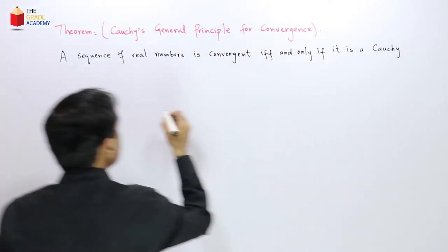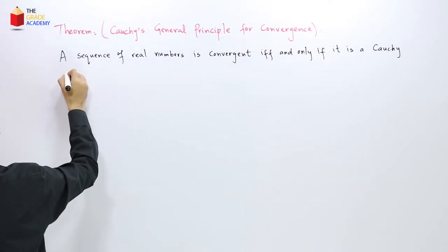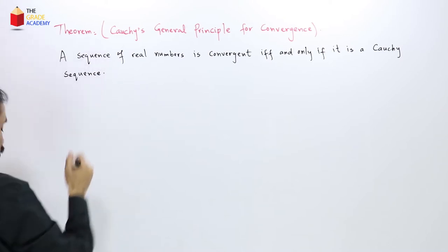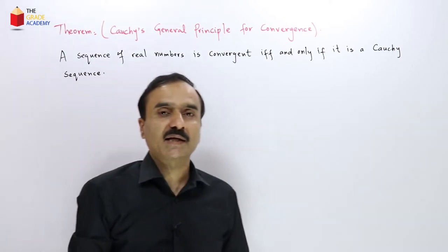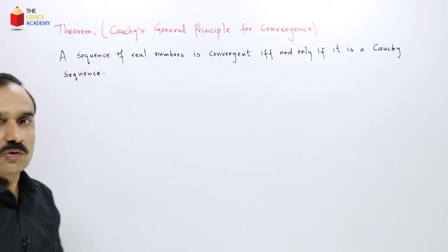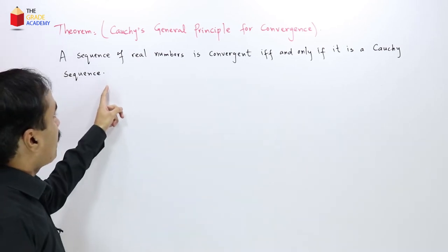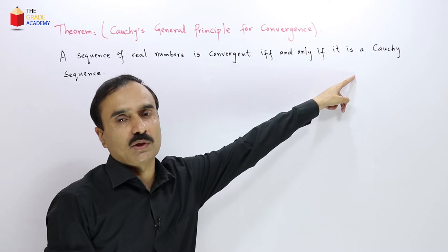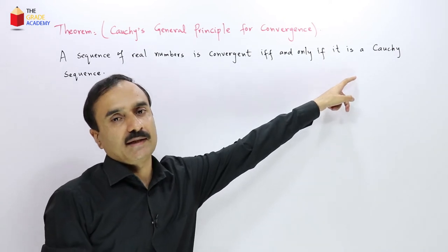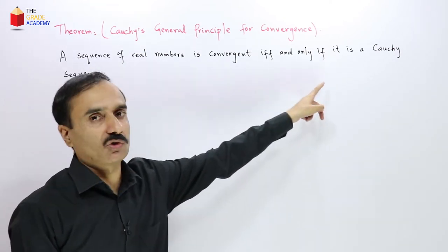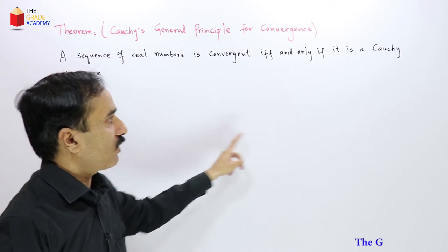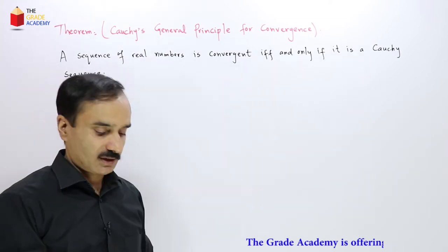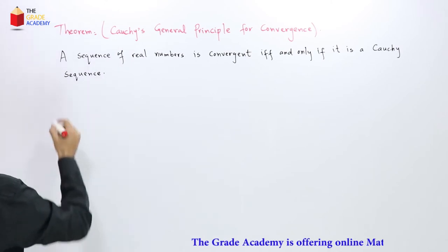This theorem is a biconditional theorem. First, we will suppose a convergent sequence and show that it is a Cauchy sequence, and then we will conversely prove this theorem by supposing a Cauchy sequence and showing that it is a convergent sequence. Let us start with the proof.